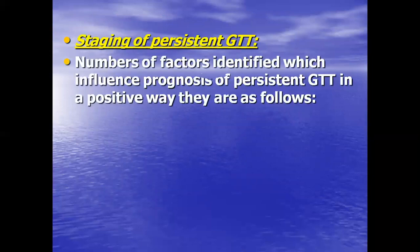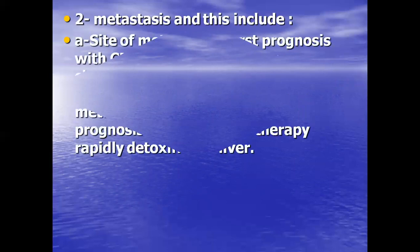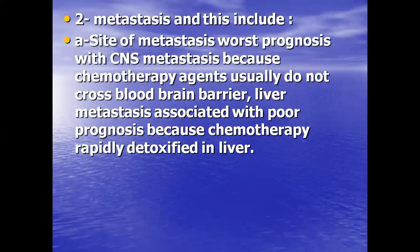In staging persistent gestational trophoblastic tumor, several prognostic factors are identified. Increasing HCG before treatment reflects a larger tumor mass. The site of metastasis matters — CNS metastasis carries the worst prognosis because chemotherapy agents usually do not cross the blood-brain barrier. Liver metastasis also carries a poor prognosis because chemotherapy is rapidly detoxified in the liver.